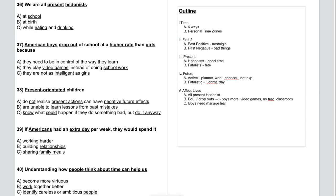Let's look at the way we do prevention education. All prevention education is aimed at a future time zone. We say, don't smoke or you'll get cancer. Get good grades or you won't get a good job. But with present-orientated kids, that just doesn't work. Although they understand the potentially negative consequences of their actions, they persist with the behavior because they're not living for the future. They're in the moment right now.